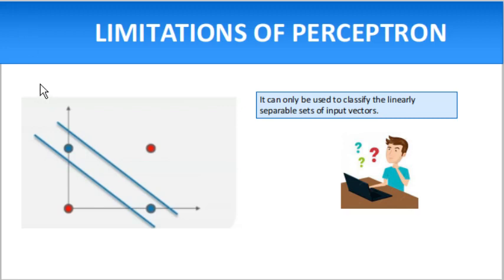The first problem is that the output of a perceptron can only be a binary number, zero or one, due to the hard edge transfer function.